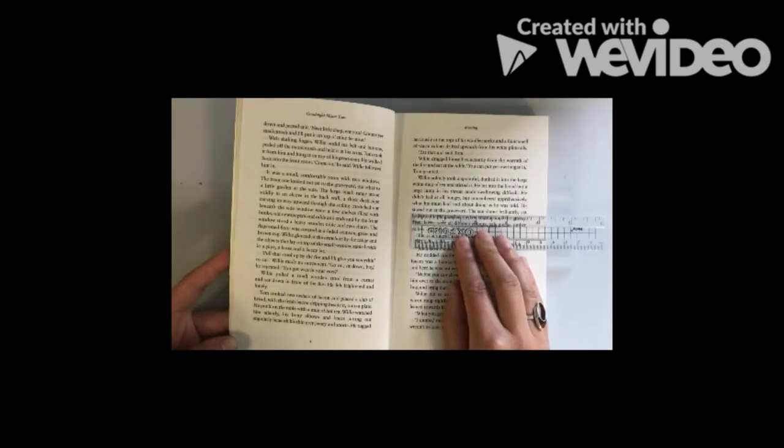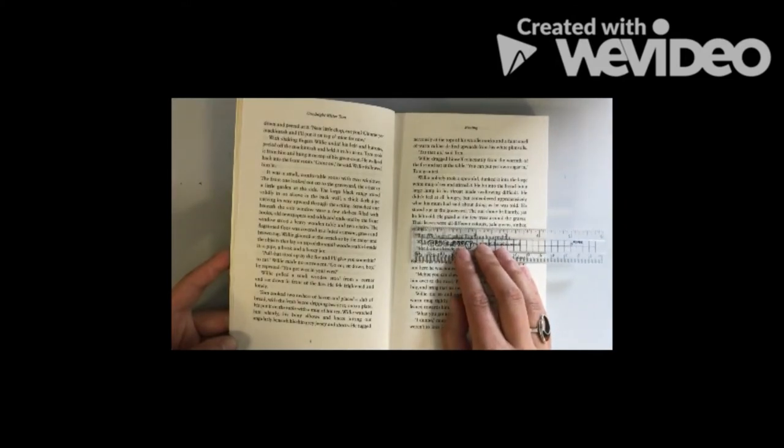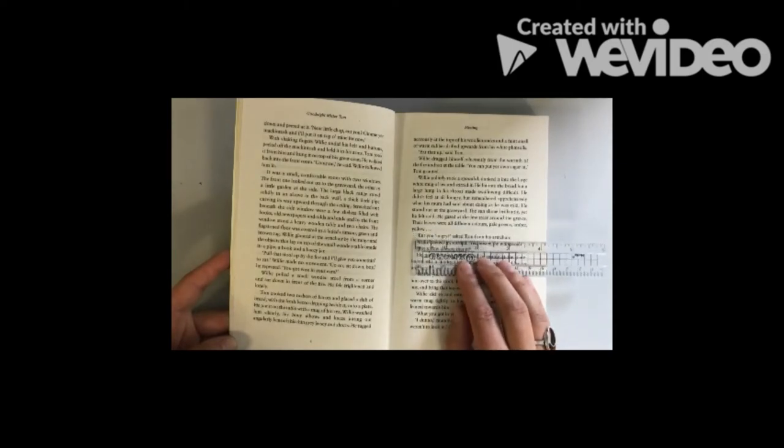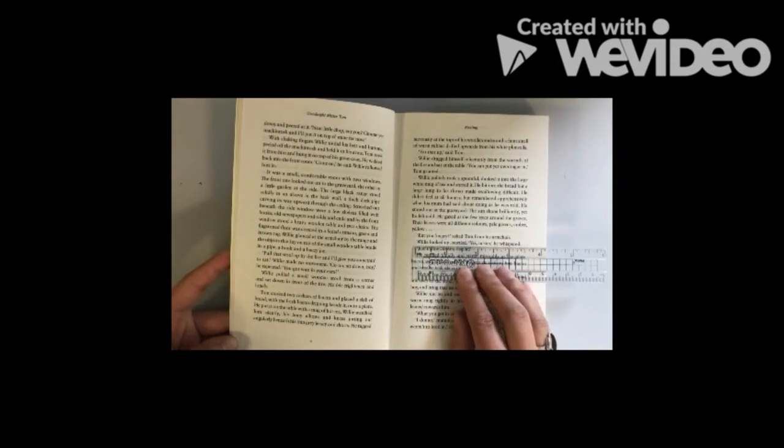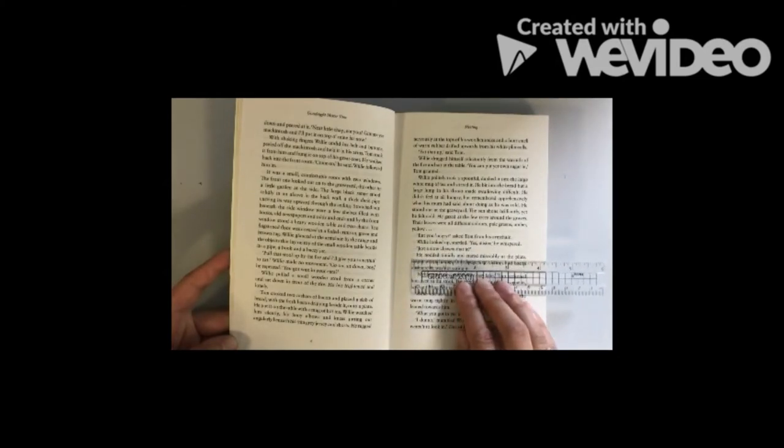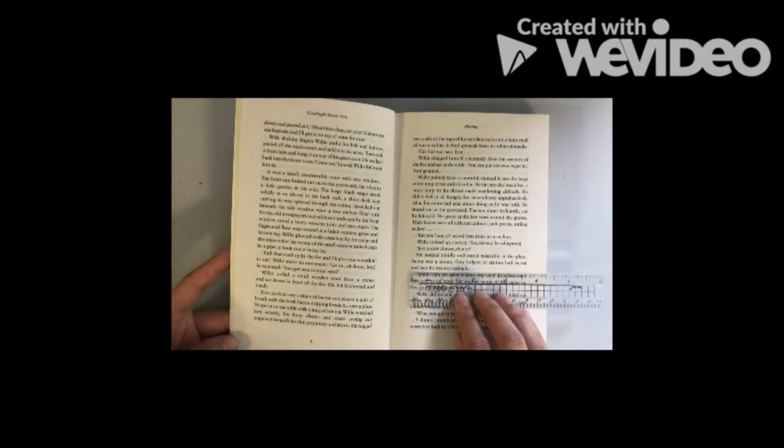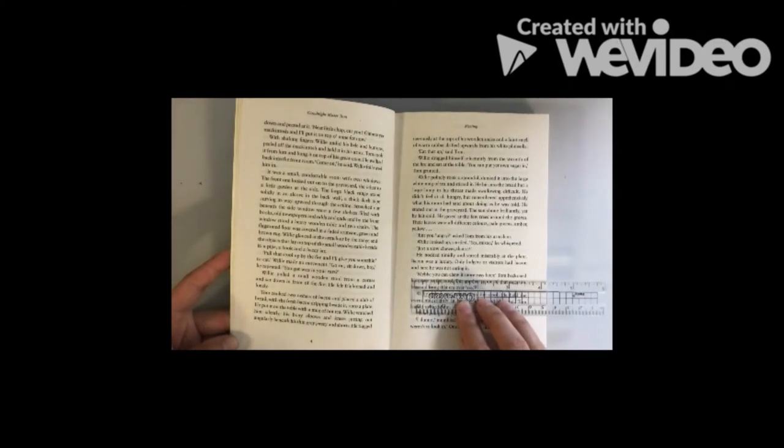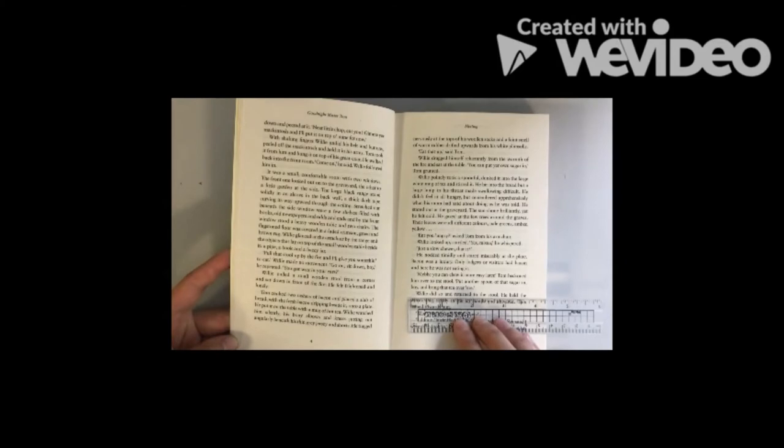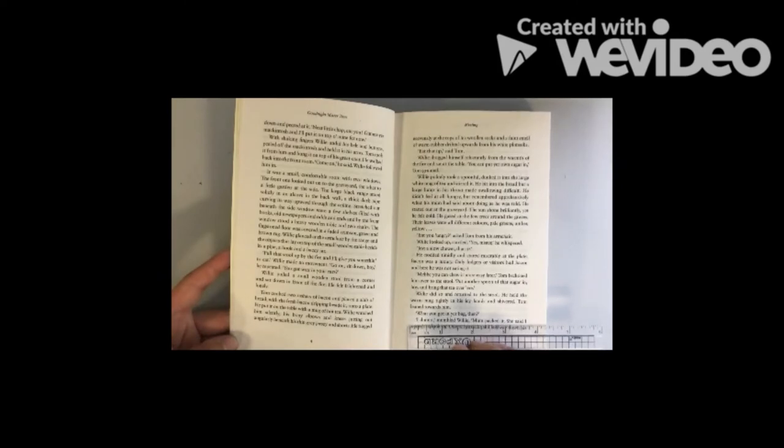He stared out at the graveyard. The sun shone brilliantly, yet he felt cold. He gazed at the few trees around the graves. Their leaves were all different colours, pale greens, amber, yellow. Ain't you hungry? Asked Tom from his armchair. Willie looked up, startled. Yes, mister, he whispered. Just a slow chewer, that it? He nodded timidly and stared miserably at the plate. Tom beckoned him over to the stool. Put another spoon of that sugar in now, boy, and bring that tea over here.